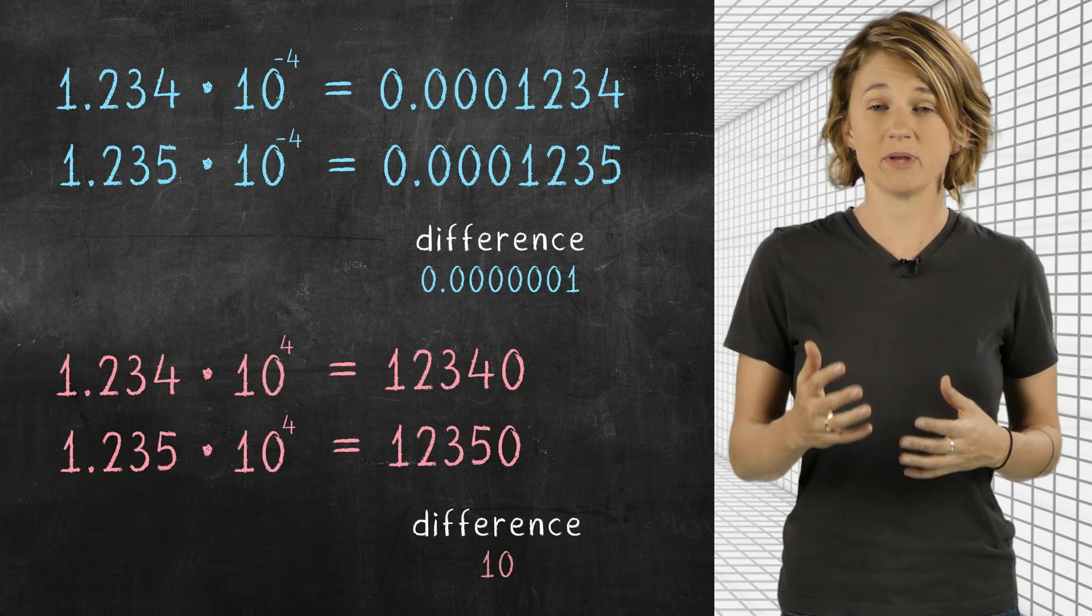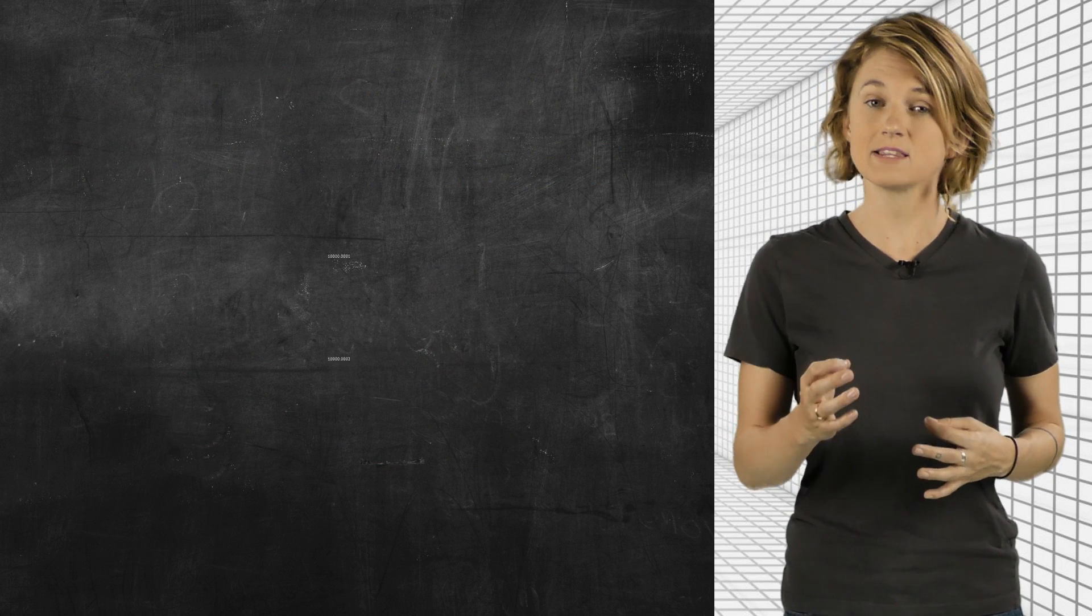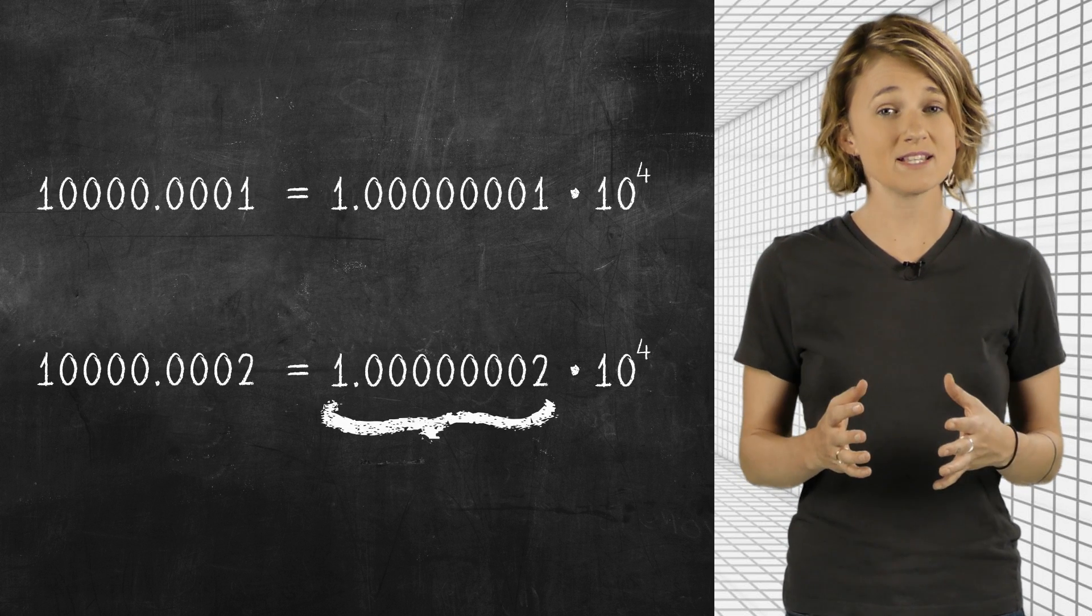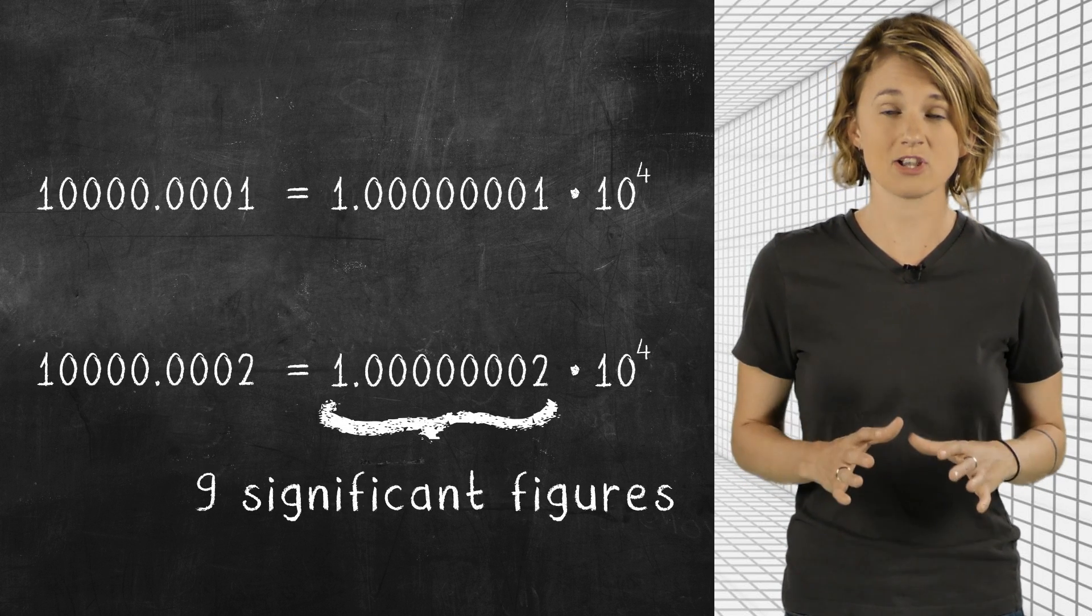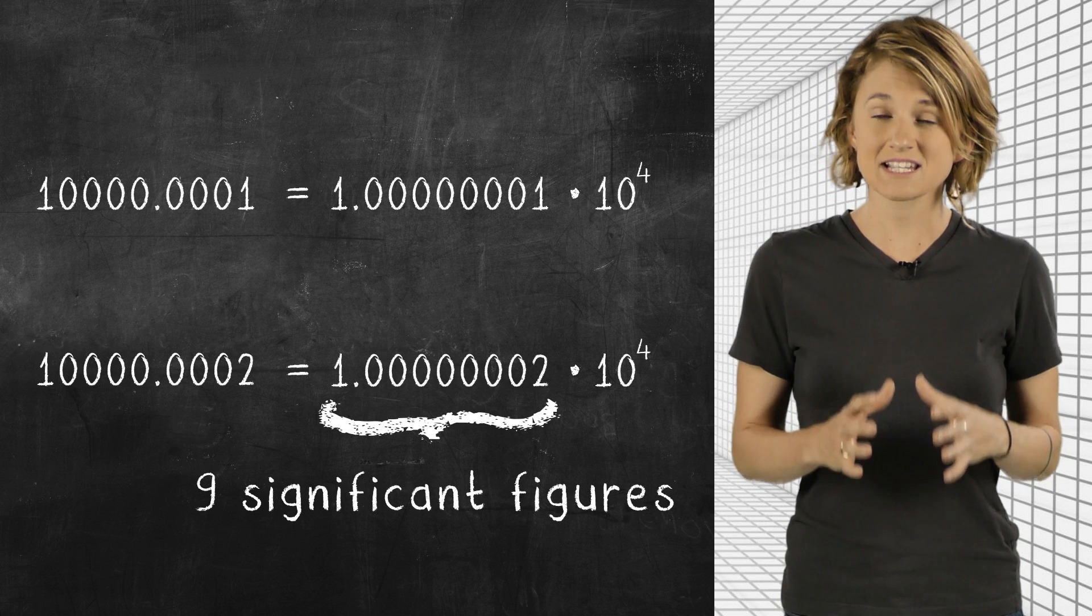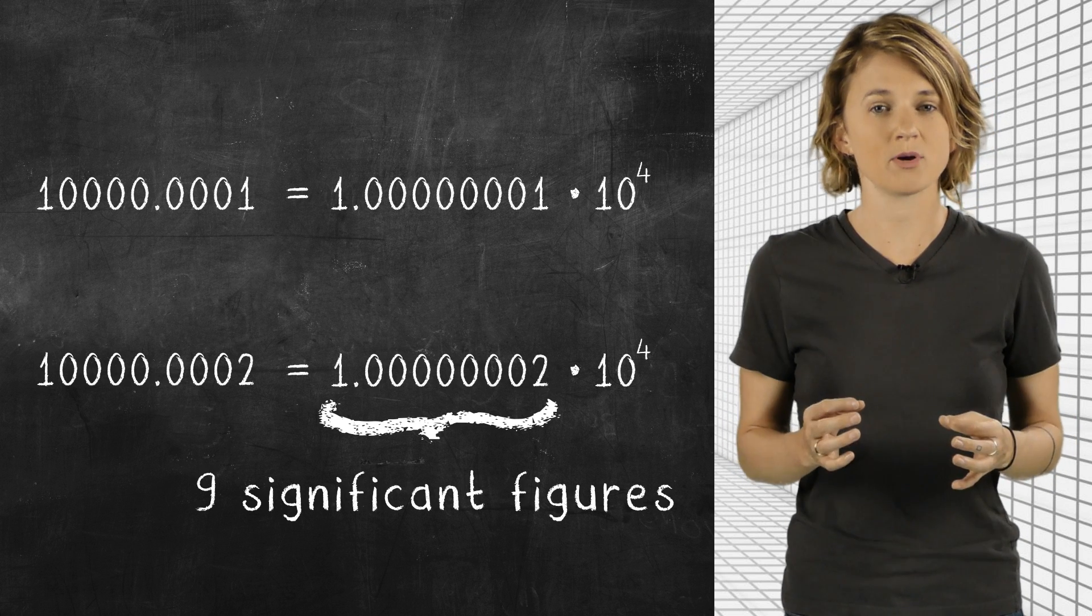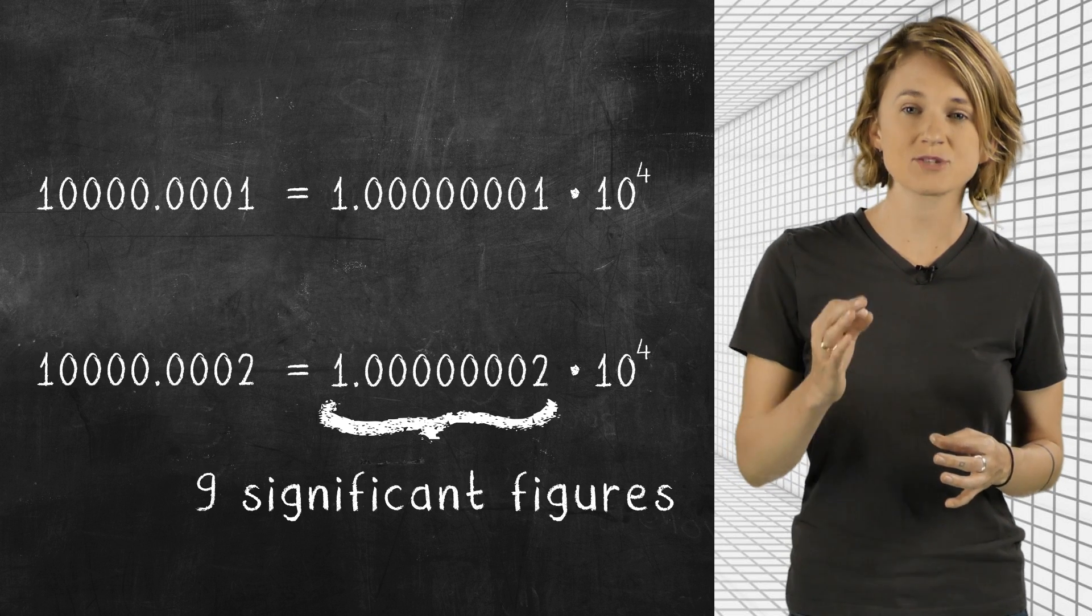Let's look at two numbers that are big and close together, like these, and rewrite them in scientific notation. The mantissa is 9 digits long. That's 9 significant digits. It takes a lot more space to store a number which is both big and precise. That's the trade-off when working in scientific notation.